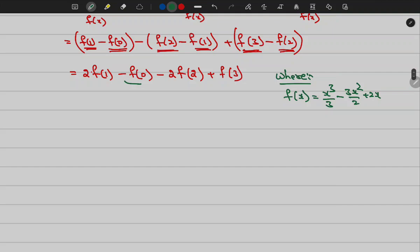If you observe here, f of 0 value is 0. Then I have to find 2 f of 1 minus 2 f of 2 plus f of 3.